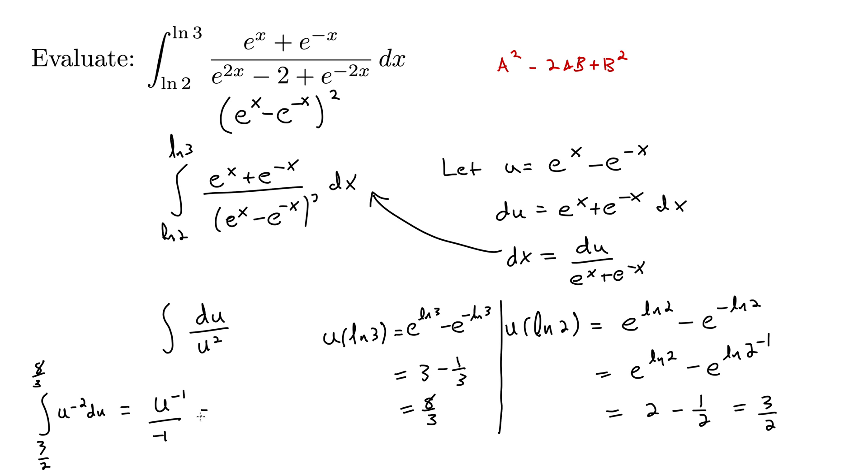So this is negative. Let's see, 1 over u. And that's evaluated from 3 halves to 8 thirds.